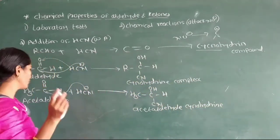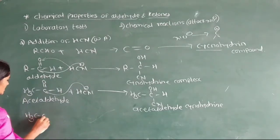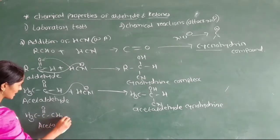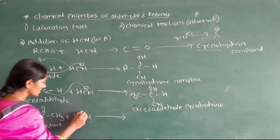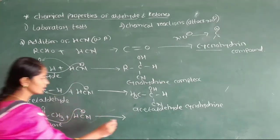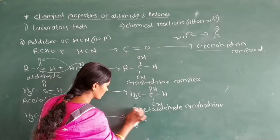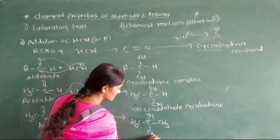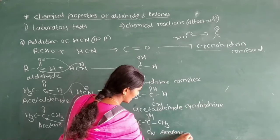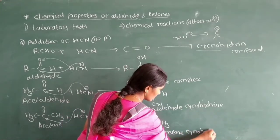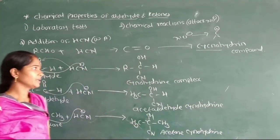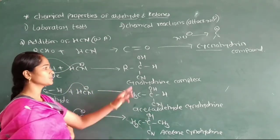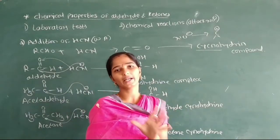We will take another example for ketone. Here we take CH₃COCH₃, which is acetone. This acetone reacts with hydrogen cyanide. Similarly, the CN adds to the carbonyl carbon, giving formation of CH₃C(OH)(CN)CH₃, which is called acetone cyanohydrin complex. That means: addition of hydrogen cyanide across the carbon-oxygen double bond leads to formation of a cyanohydrin complex with an increased number of carbon atoms.